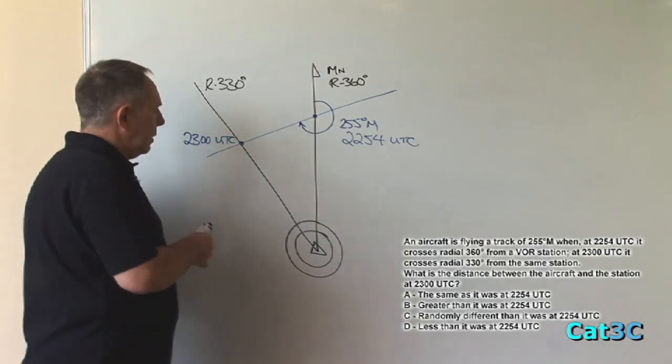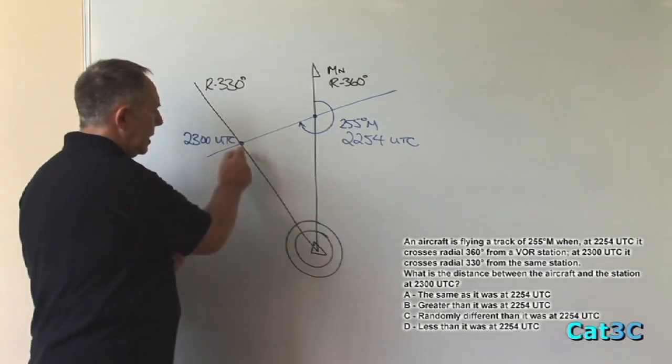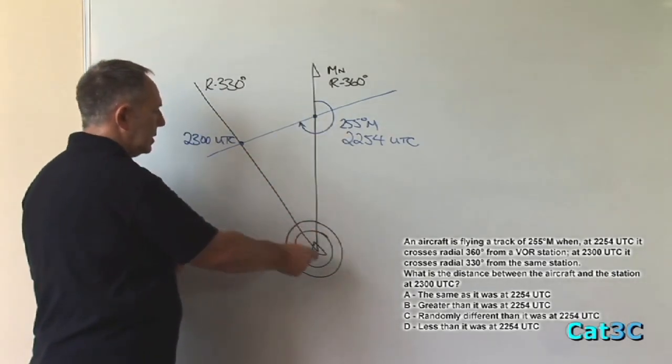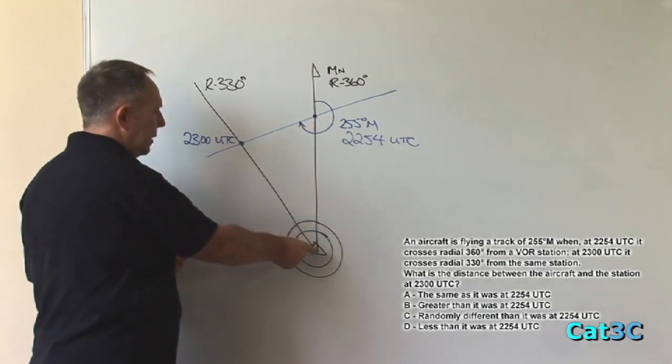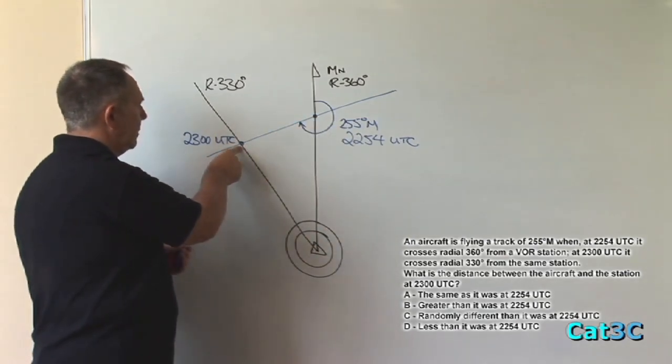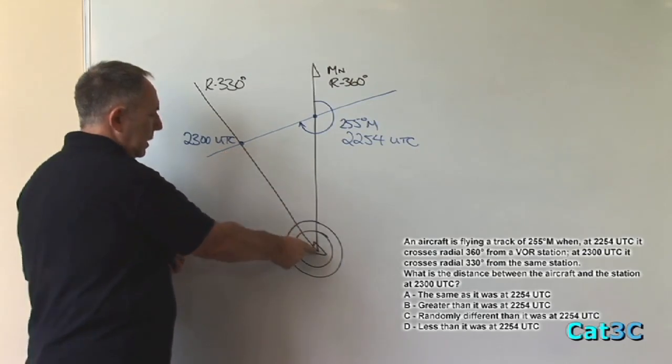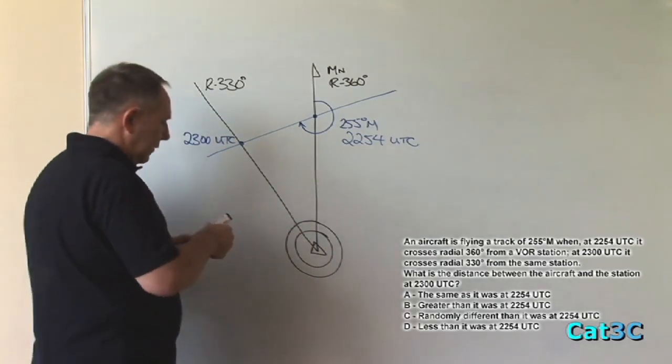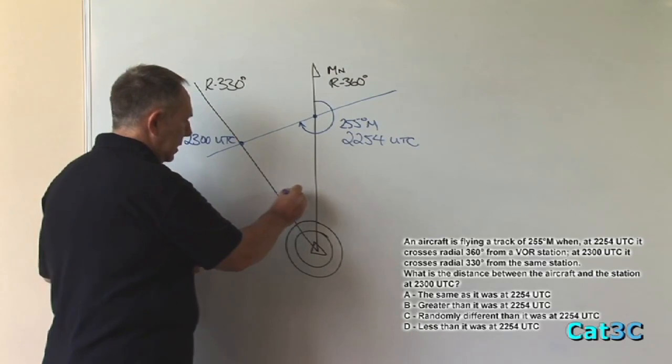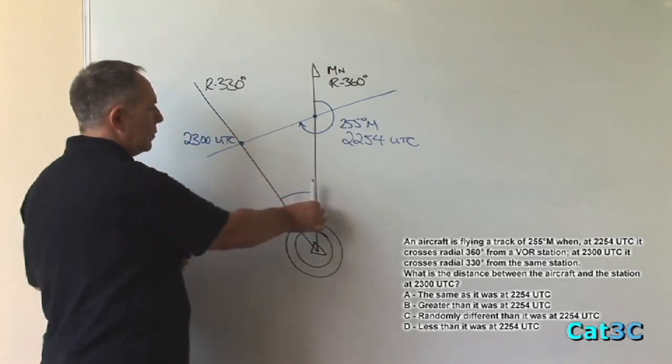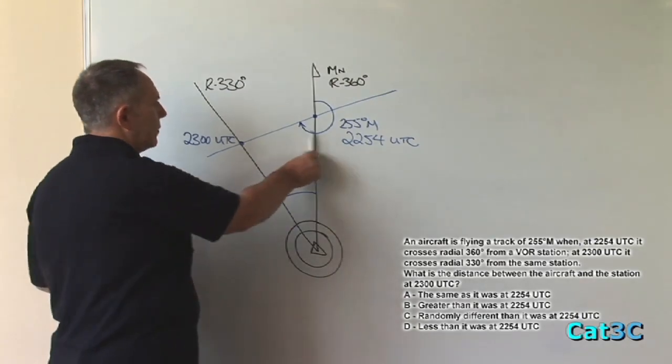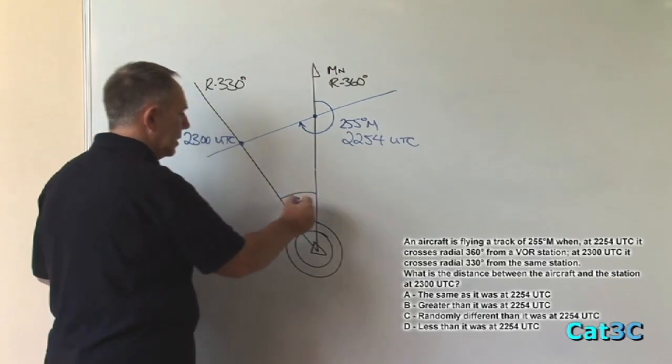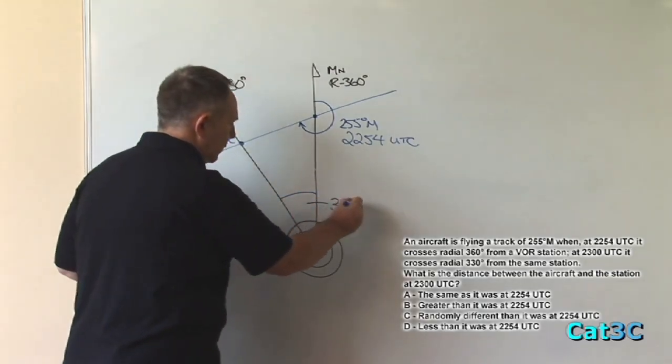What we have to do now is to prove the relationship between the lines from the aircraft position at 2254 UTC and the VOR and the aircraft position at 2300 UTC and the VOR. Now the first thing we note is this angle between the 360 degree radial and the 330 degree radial is the difference between them, 360 minus 330 equals 30 degrees.